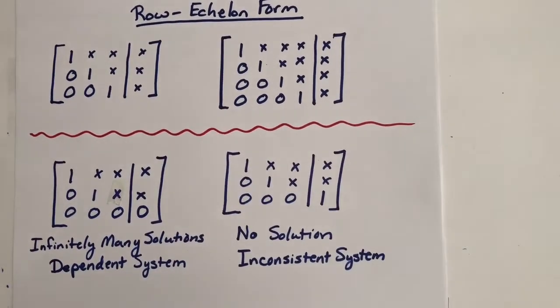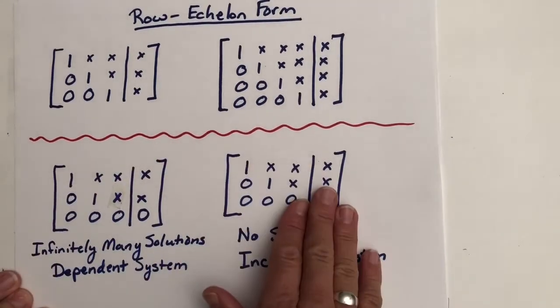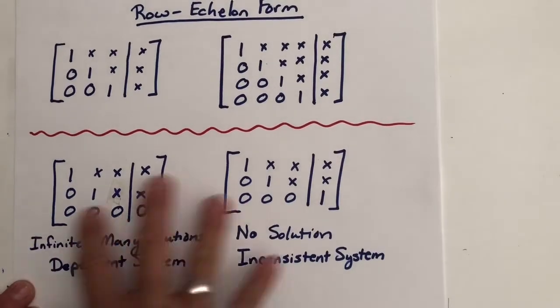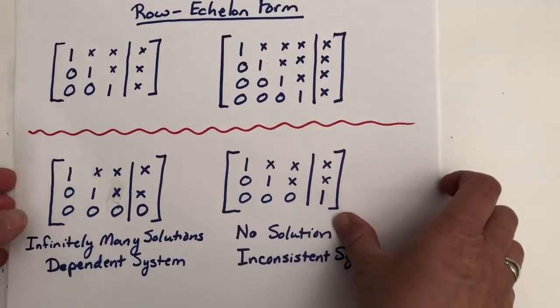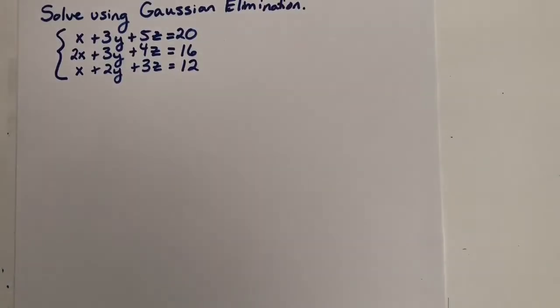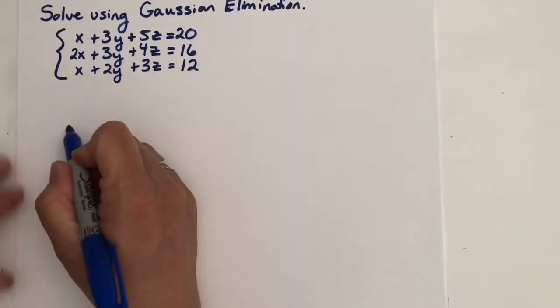But let's do an example where one of these things happens and you won't know until you start working on the system that one of these things is going to happen. But let's do a problem. So we're going to solve this system right here.